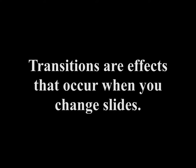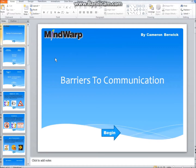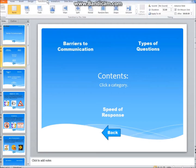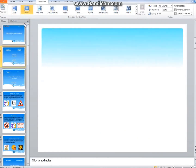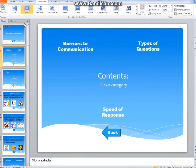Next we will look at transitions. Transitions are effects that occur when you change slides. To add a transition, select the slide you want to transition to. Move the mouse to the transitions bar, then click on the more button to see the list of available transitions. Click on your chosen transition to apply it.